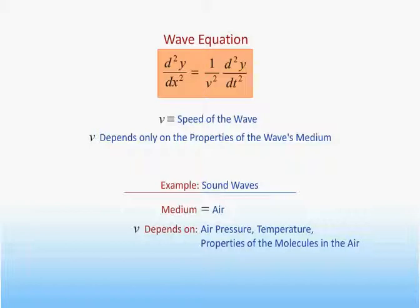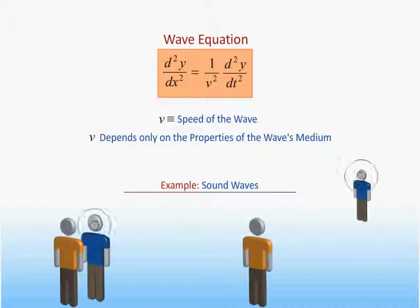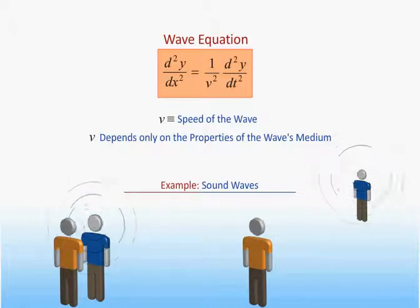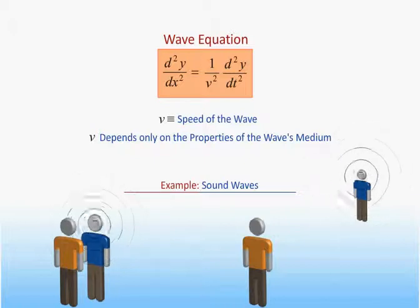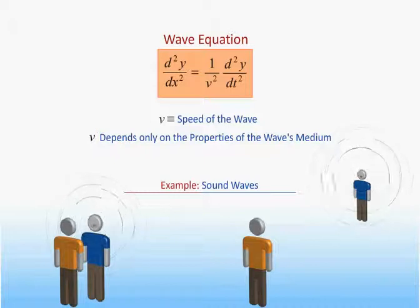The fact that the speed of the wave does not depend on the wavelength or frequency of the wave should be consistent with your experience. For example, you know that sound waves of all frequencies must travel at about the same speed, since a person talking to you from down the hall sounds about the same as he would standing right next to you. The sounds from a distance will be quieter, but the voice, which is made up of both high and low frequencies, will still sound the same.